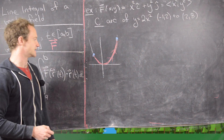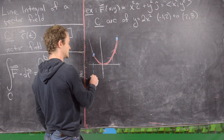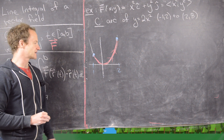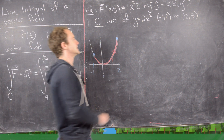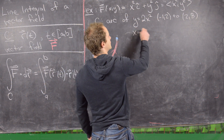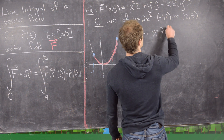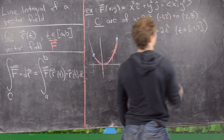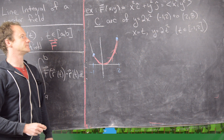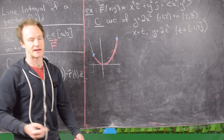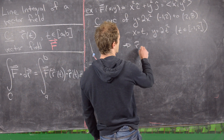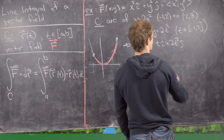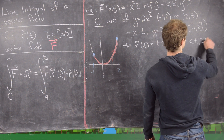Let's parametrize this curve. It's easy — we can let t equal x. So t runs from negative 1 to 2, with x = t and y = 2t². In vector form, R of T equals T in the i direction plus 2T² in the j direction — that is, the vector <t, 2t²>.